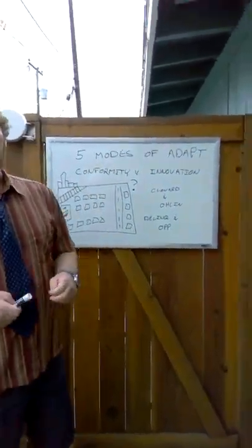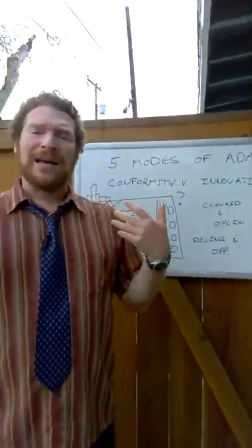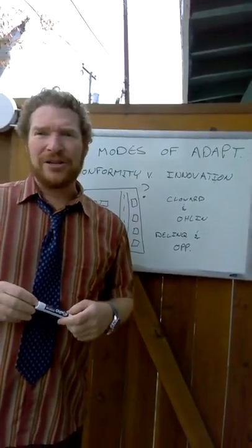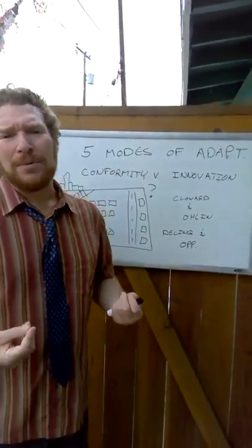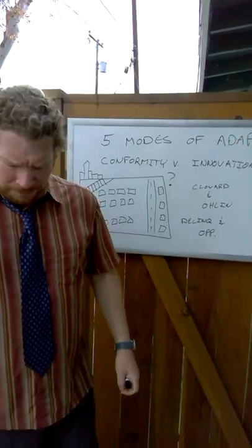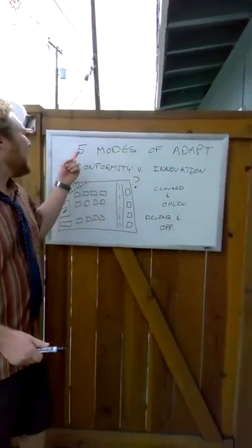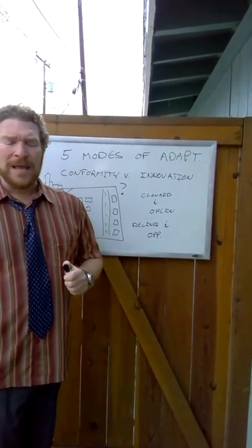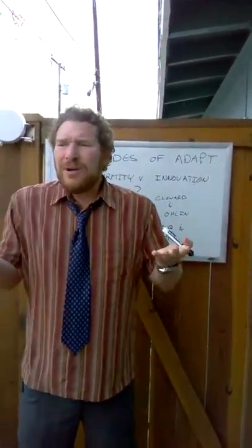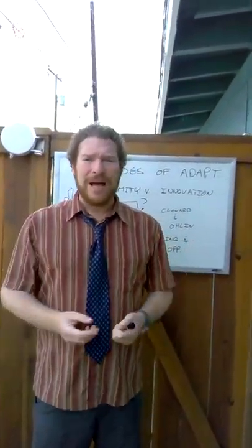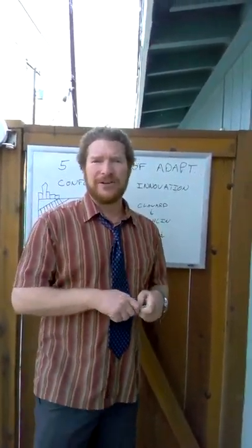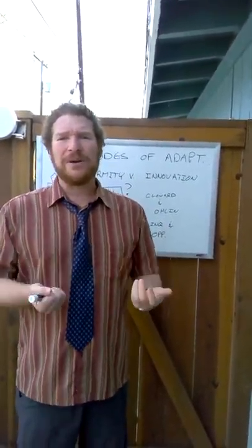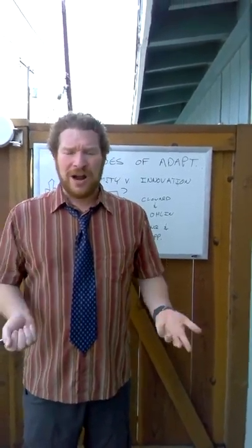We left off talking about strain, status frustration, and reaction formation. There's a basic problem with Merton's theory. The basic problem is that he says there are five different modes of adaptation. In other words, he admits right up front, not everybody who experiences blocked opportunities to the American dream, not everybody who experiences strain turns to crime.